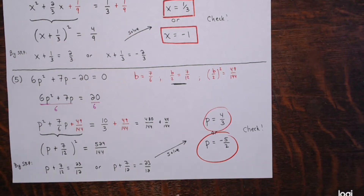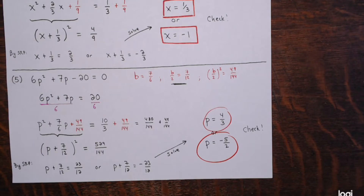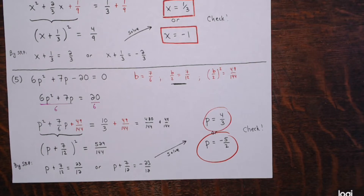Notice that for any quadratic equation, I was doing the same thing every time: get the quadratic and linear terms on one side with a constant on the other; ensure the quadratic coefficient is 1; complete the square by adding (b/2)² to both sides; write the perfect square trinomial as a square; apply the square root property; solve for the variable; and check your solutions.